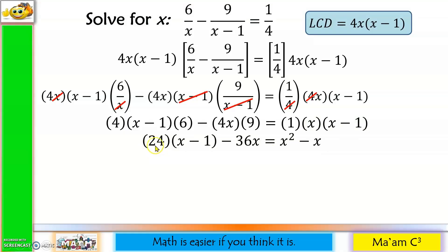I'll distribute 24. 24 times x is 24x. 24 times negative 1 is negative 24. Copy negative 36x. Next step, I'm going to transfer everything on the other side. So negative x squared minus x. Followed by 24x. Transfer to the other side becomes negative 24x. Then negative 36x to the other side, positive 36x. And lastly, the constant becomes positive 24. Since nothing is left on this side, this will be equal to 0.